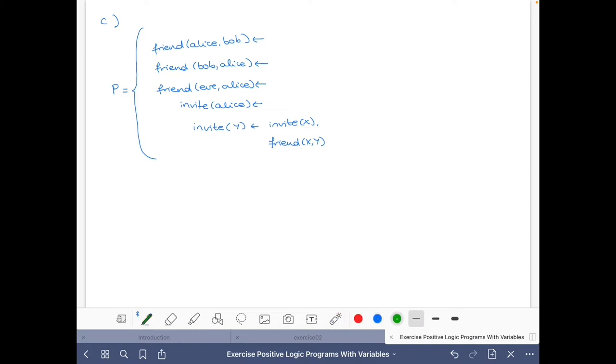Then, let's go quickly because now we know well how to do it. The Herbrand universe contains these constants Alice, Bob and Eve. And I will write only the initials also, Alice, Bob and Eve. Now the predicates that we have are friend and invite. Friend has two arguments and invite has a single argument.